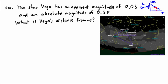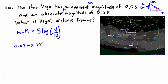If that doesn't make any sense to you, no problem. We can just calculate it. So let's use the equation. It goes m minus M equals 5 times log of d over 10. So apparent magnitude, that's just little m. Absolute magnitude, that's big M. So I know that little m is 0.03, so 0.03 minus 0.58 equals 5 log of d over 10. The whole goal is to solve for d.